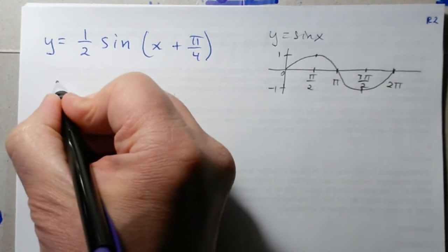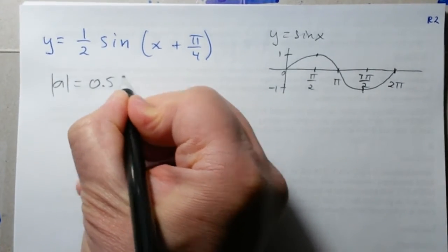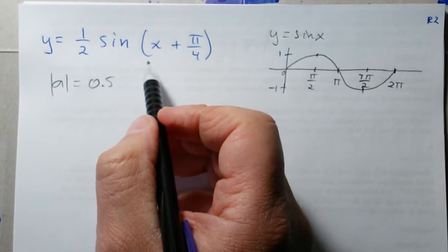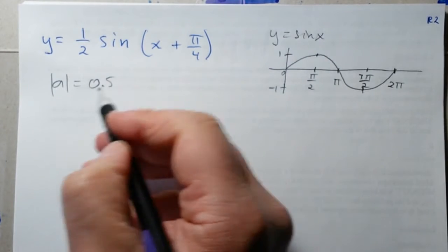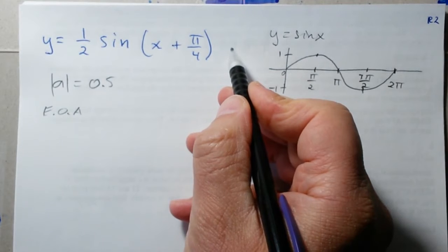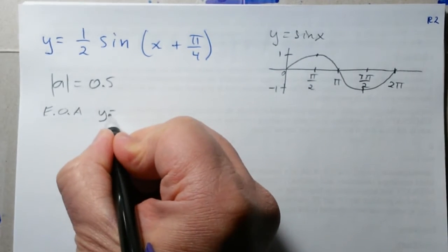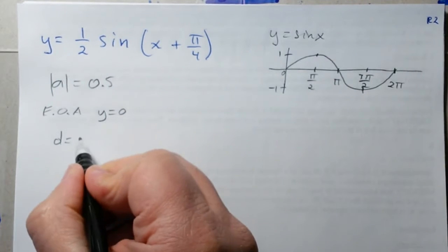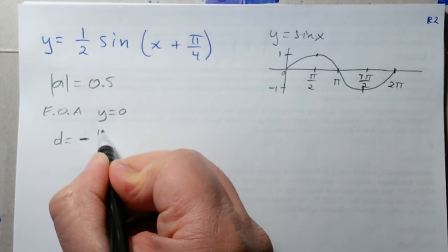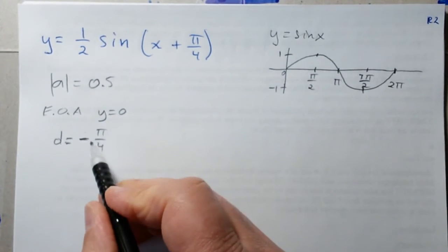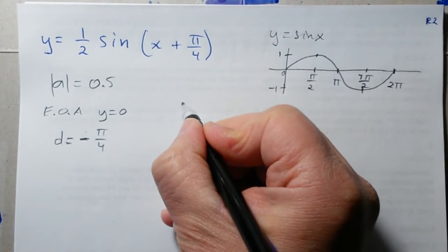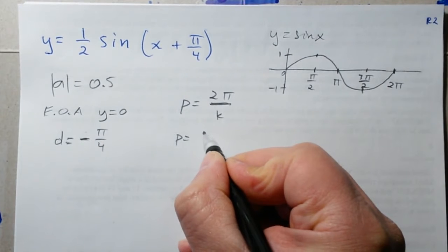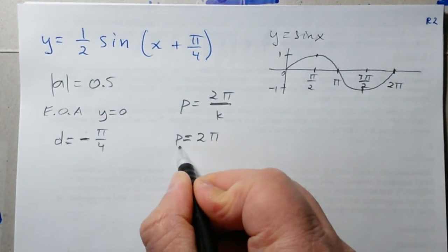Now let's collect all the other data. The amplitude is one over two, or 0.5. There's a k value — let's come back to that. The equation of axes: it's not shifting up or down, so the equation of axes will be y equals zero. Then the d value: there's a shift to the left by pi over four, so d equals negative pi over four. The period formula is two pi over k; since k equals one, the period is two pi.